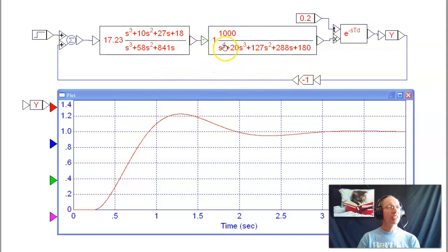But frequency domain techniques tend to be a little bit aggressive when I design for phase margin. I'm going to have a little bit too much gain, a little bit too much overshoot. That's typical though.